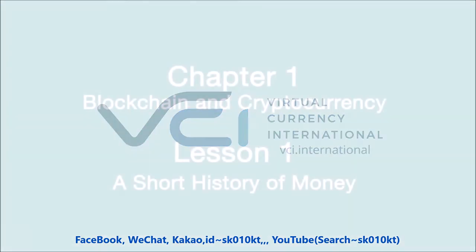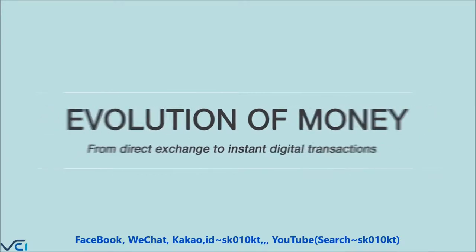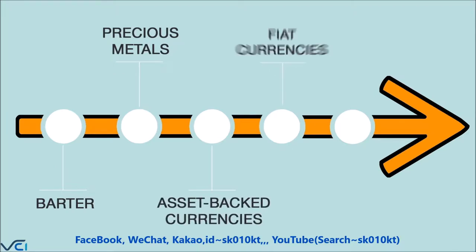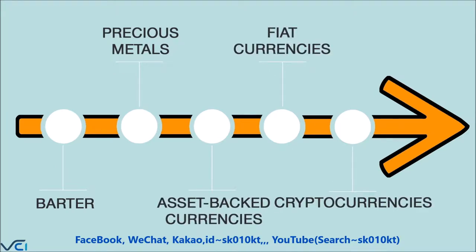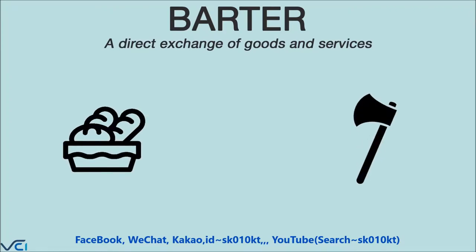Lesson one: a short history of money. Welcome to our course on crypto investment. In the first chapter we'll discuss the basics of cryptocurrencies and the technology that underpins them — blockchain. In this first lesson we'll look at how the concept of money has changed over time. We'll see that cryptocurrency is part of the natural evolution of money; in its essence it was a response to the gaps in people's needs.